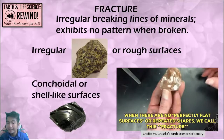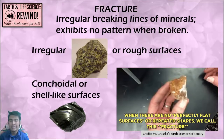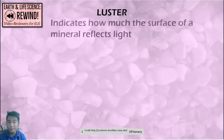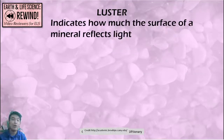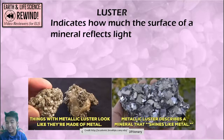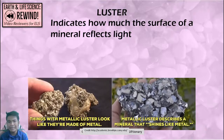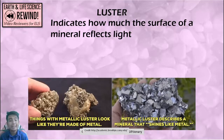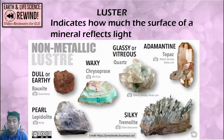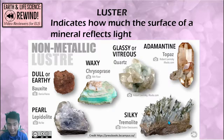Fracture can also be conchoidal, meaning it's not a flat plane but a shell-like surface when an object is broken. Luster as a property indicates how much the surface of the mineral reflects light — basically, how shiny a mineral is. Some minerals shine like metals but are not literally metals; we call that metallic luster. Luster is described in different ways: dull or earthy, waxy, glassy, adamantine (diamond-like), or silky.